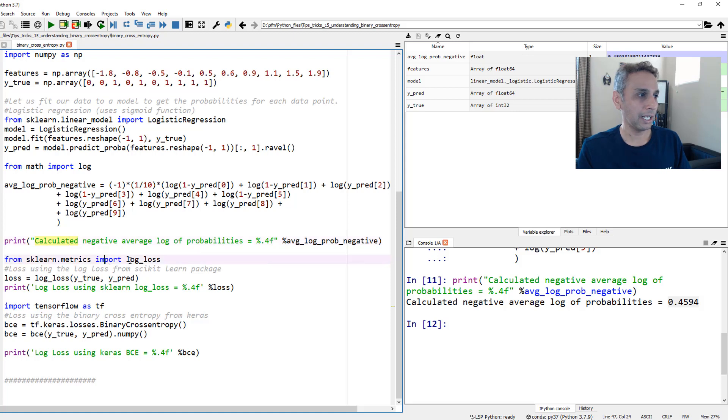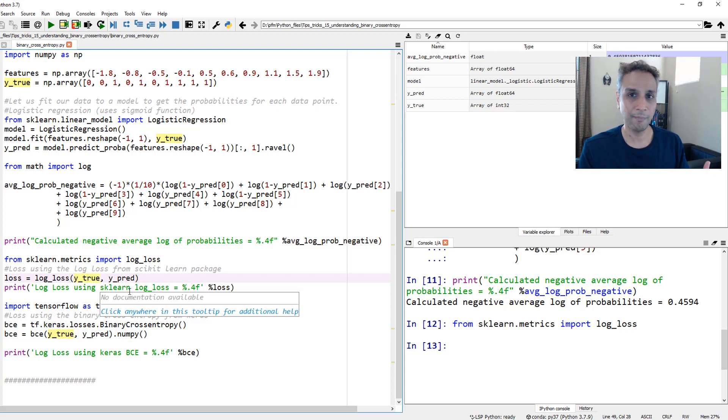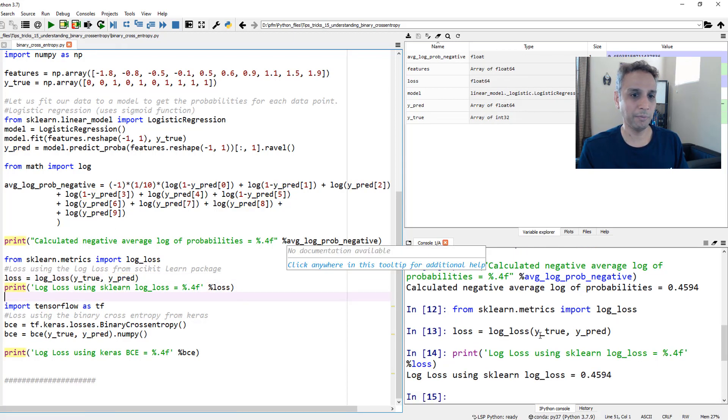Based on this, now let's actually see what our binary cross entropy is. First, let's import log from our math library. This is the calculation I just put on the screen earlier. Let's run these lines to see what the calculated value is going to be. Our negative average of all the log probabilities is 0.4594. That's what we got when we calculated this manually.